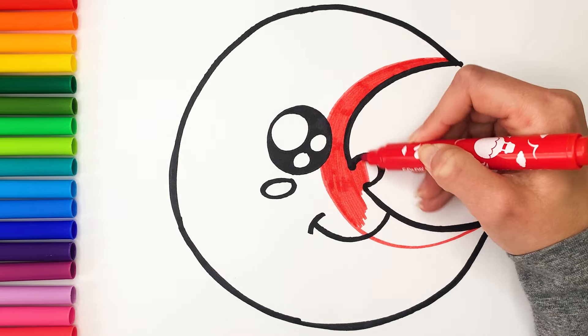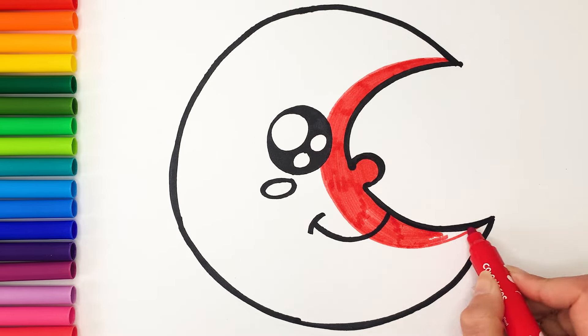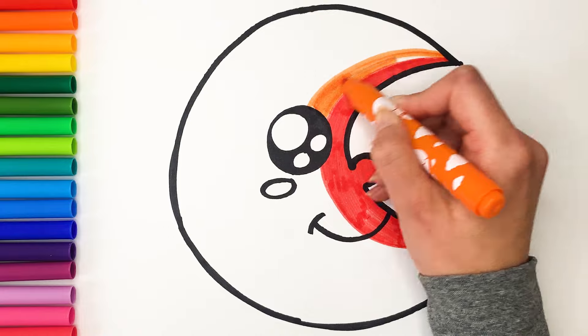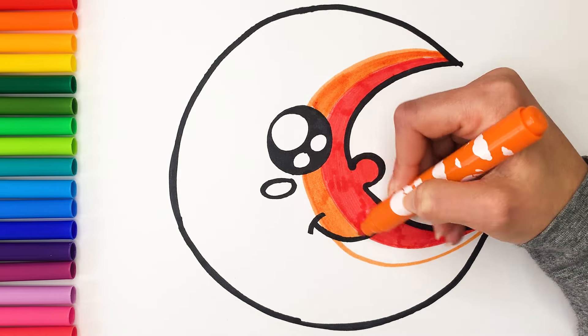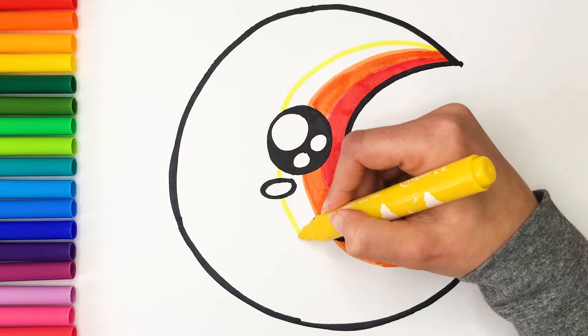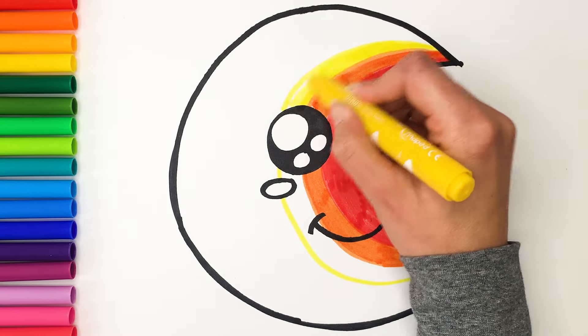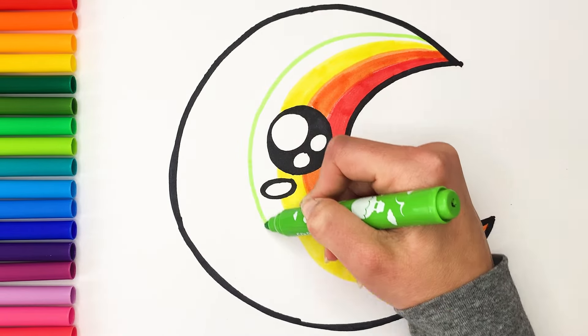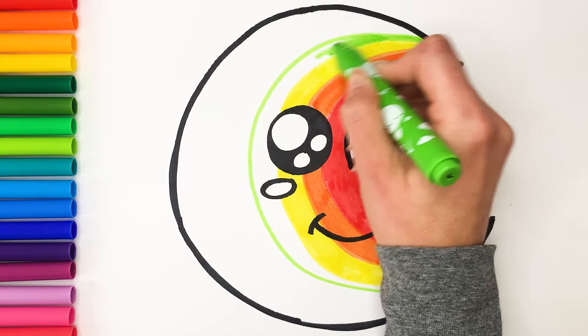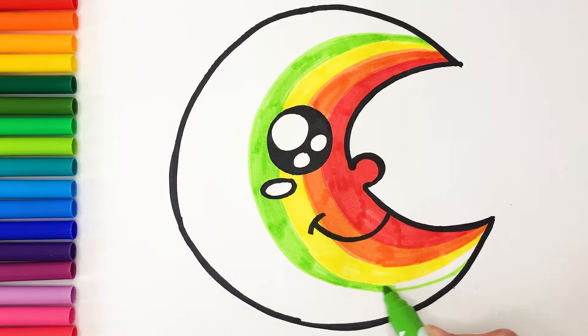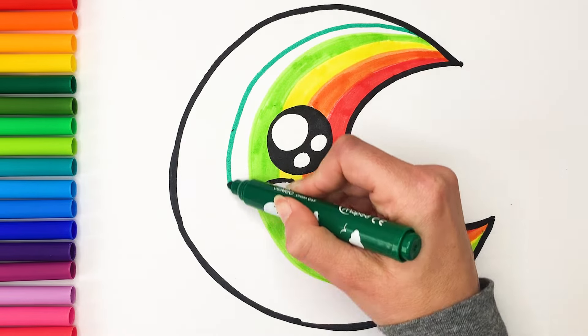I start with red here. Then orange. Yellow. Light green. Dark green.